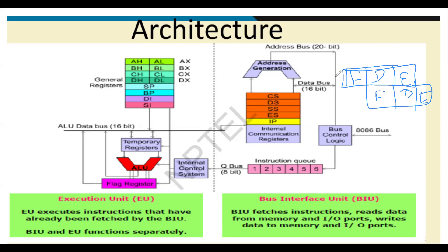The bus interface unit generates the 20-bit address. This address generation uses: segment address × 10 plus offset address. The 8086 also introduced memory segmentation — code memory, data memory, and stack segment are kept separately. The 8086 was a pioneer in creating separate program memory and data memory.